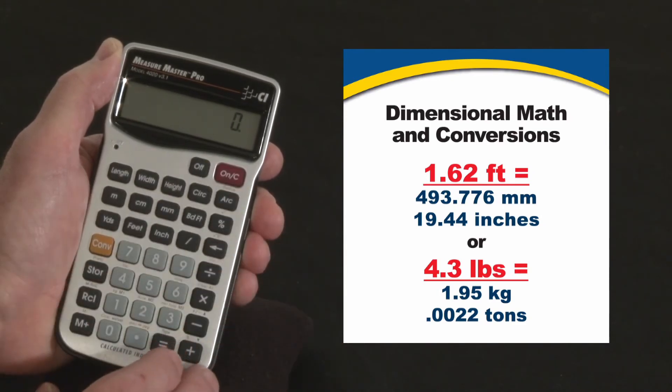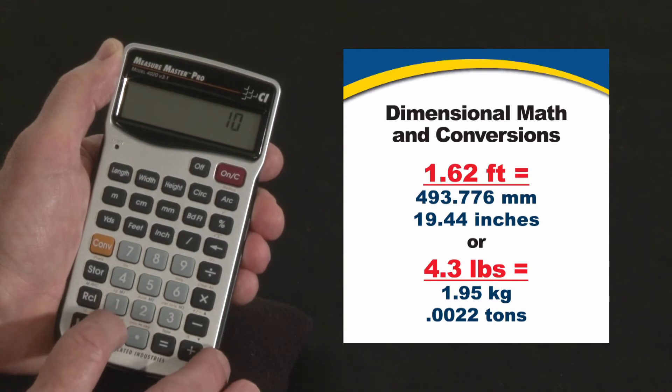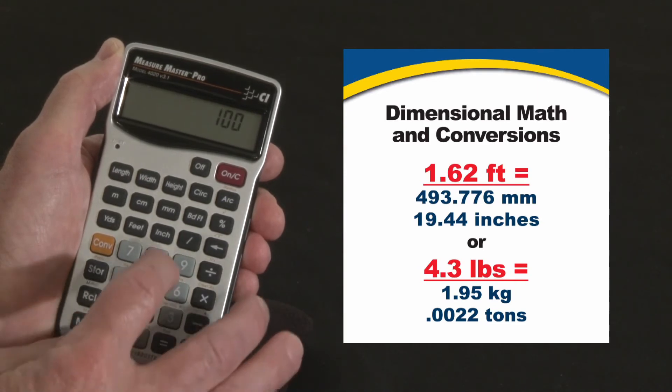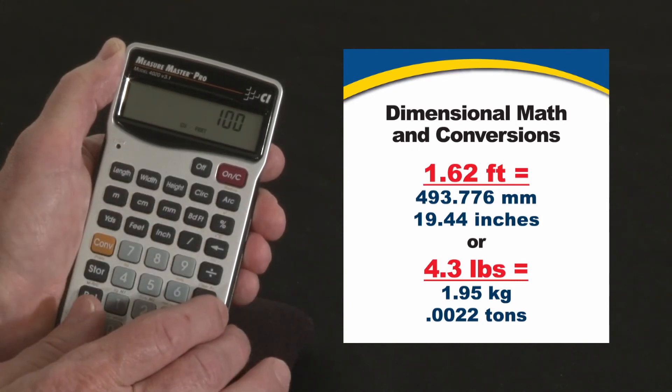You can also directly enter square area and cubic volume values. For example, if you knew you had 100 square feet, you had a 10 by 10 room, you just hit 100 feet, feet, there it says square feet. One more press, we'll move it over to cubic feet.